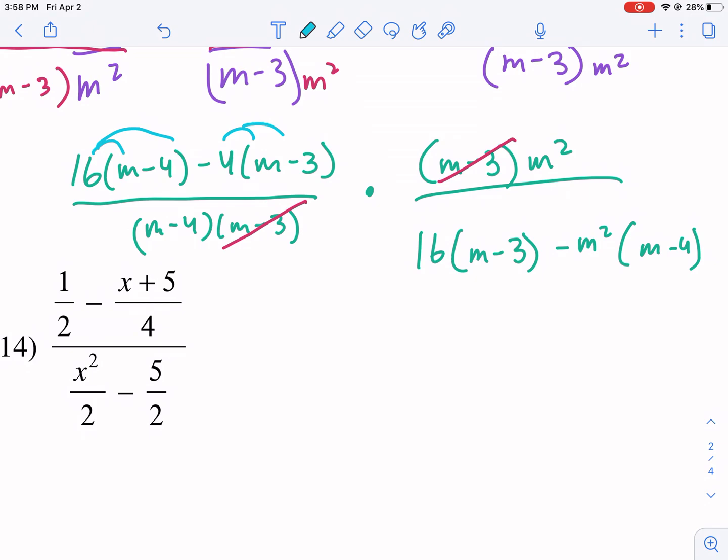So I'm going to go ahead and start that process right here in the blue. So I have, once I do 16 times m, I get 16m minus 64 minus 4m plus 12. And this is all going to be multiplied by m squared. That's in the top. I'm just going to do the top right now, and then I'll worry about the bottom in a second.